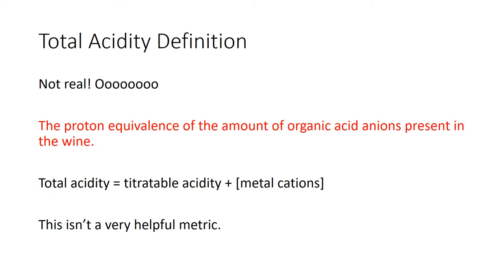Total acidity isn't really a real thing. It's the proton equivalents of organic acid ions present in the wine — basically titratable acidity plus metal cations, which usually means potassium (K⁺). During the ripening process on the vine, a tartaric acid molecule in the grape berry swaps its H⁺ for a K⁺. This metric isn't very helpful for winemakers. It's used more in marketing literature because 'total acidity' is easier to communicate to consumers than 'titratable acidity.'